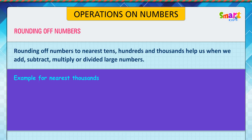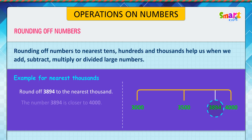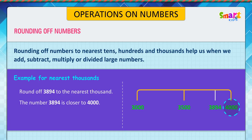Example for nearest thousands. Look at the picture: round off 3,894 to the nearest thousand. The number 3,894 is closer to 4,000. Therefore, we round it off to 4,000.